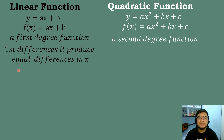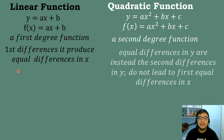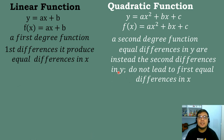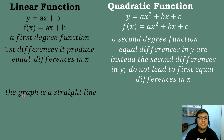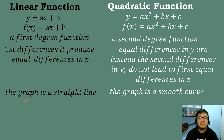For the linear function, the first difference it produces is equal to the first difference in x. For the quadratic function, equal differences in x instead lead to equal second differences in y — it does not produce equal first differences. For the linear function, the graph is a straight line. And for the quadratic function, the graph is a smooth curve.